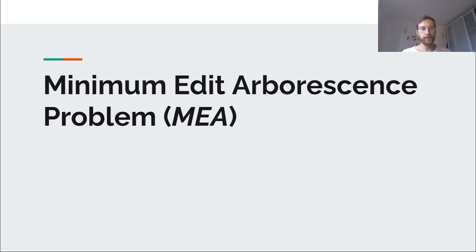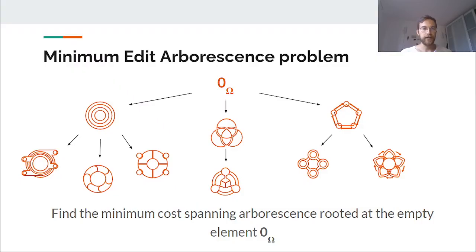Now we are ready to formulate the minimum edit arborescence problem. Generally speaking, the MEA looks for a minimum cost arborescence on the space Ω we are interested in, rooted at the empty element. The arrows or edges between elements of the space represent the edit paths that transform the source element into a target one. And ideally, if one were able to compute the optimal edit paths between every pair of elements, the problem reduces to just a traditional minimum spanning arborescence problem, which can be done in polynomial time.